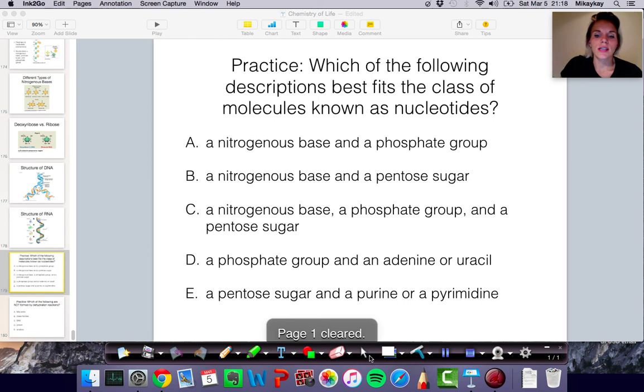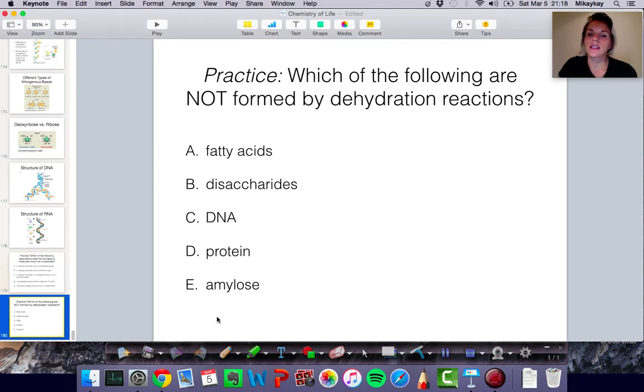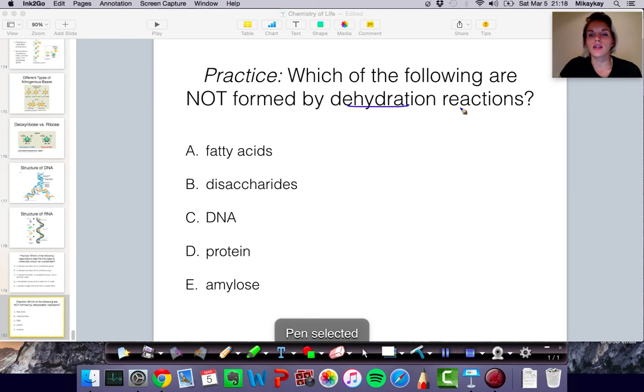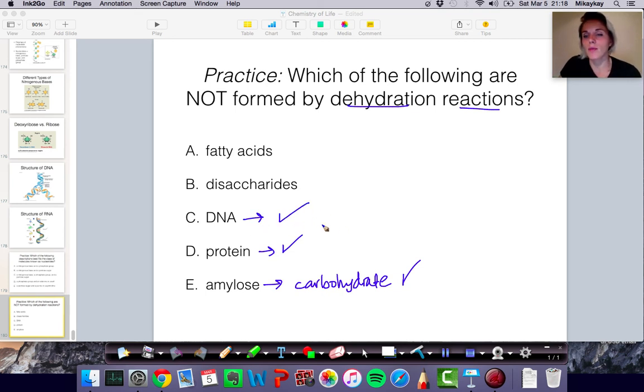And we have one more question that's kind of tricky. Which of the following is not formed by a dehydration reaction? So take a moment and try to answer this. Pause the video. Here are my answers. Amylose. That is a type of carbohydrate. And that means that it is formed by a dehydration reaction. Protein, we know that that's formed by a dehydration reaction. DNA, also a dehydration reaction. When nucleotides come together during that reaction, water is released. Disaccharides, a type of carbohydrate, formed in a dehydration reaction.